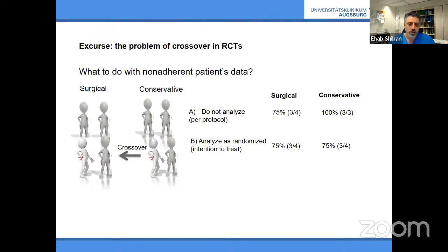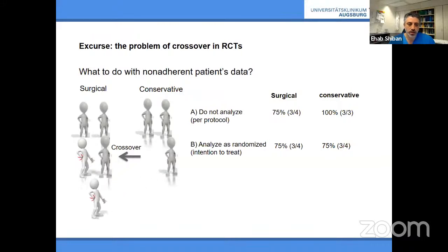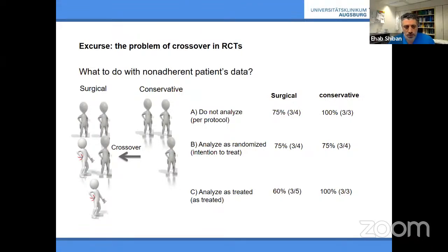Intention-to-treat analysis — the most common approach — analyzes patients as randomized, even if they crossed over. If randomized to conservative treatment but received surgery, they're counted under conservative treatment. This shows both arms at 75% effectiveness — the most accurate reflection. The 'as-treated' analysis favors surgery but misrepresents conservative treatment. For RCTs with crossover, intention-to-treat is the best analytical method.